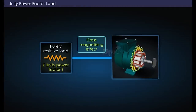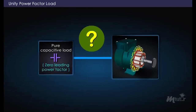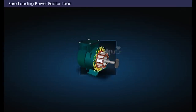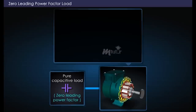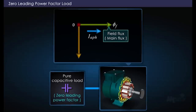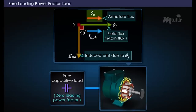Let us find out what happens when a purely capacitive load is connected. When an alternator is connected to a purely capacitive or zero leading power factor load, the armature current I_aph leads the induced EMF E_ph by 90 degrees. Hence, the flux phi_a produced by that current also leads the induced EMF E_ph by 90 degrees.